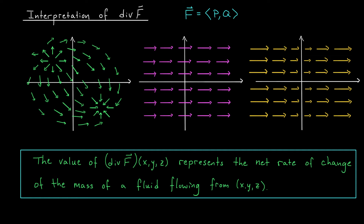You can see that in the first vector field, something interesting is happening at certain points. If we're thinking of this as the velocity of water throughout a lake, then at this point, the water seems to be springing into existence — maybe there's some sort of a source, a pump that's pumping water into the lake. The divergence at this point will be positive. At another point, the water is disappearing into nothingness — maybe there's some hose sucking water out of the lake. Here the divergence will be negative.